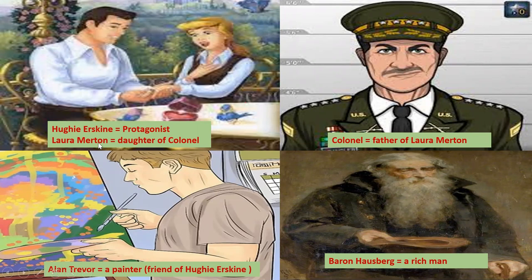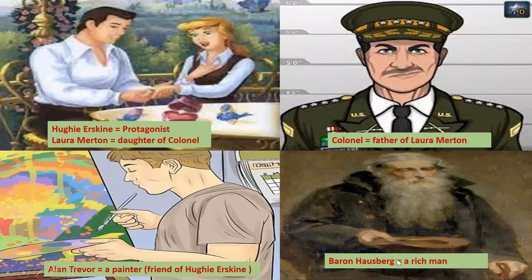The first three main characters are Hughie Erskine, Laura Martin, and the Colonel. The fourth main character is Alan Trevor — he is a painter and a friend of Hughie Erskine. The fifth is Baron Hoesberg, who is a rich person. Laura Martin would be the would-be wife of Hughie Erskine.